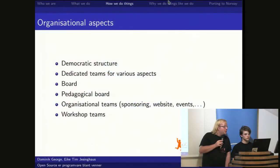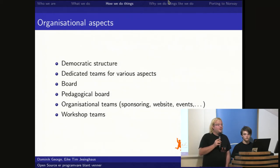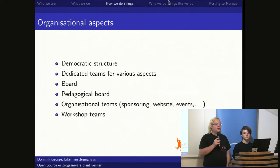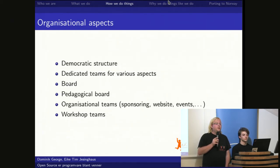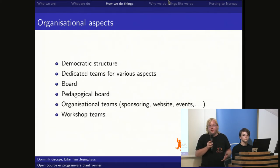We have a pedagogical board that cares about how we work with children in workshops. We also have workshop teams — the four teams that Eike mentioned — which children and adults in the organization can join. The basic rule is that for a team to exist, there must be at least one adult and two children, and there must never be only adults in a team.